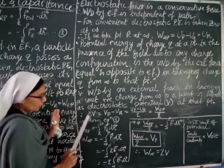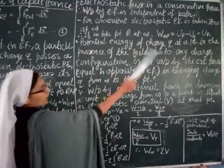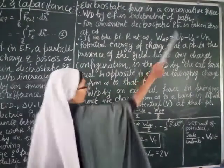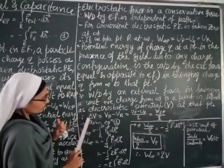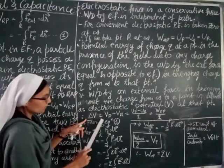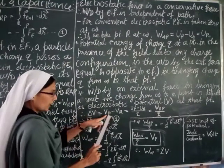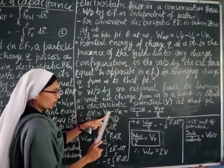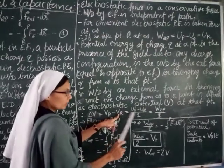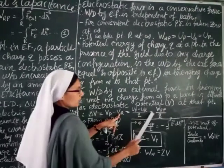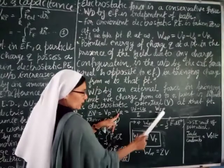So delta V = V_P − V_R, and taking the reference R at infinity, this becomes: (U_P − U_infinity) / Q = W_RP / Q, which gives us the potential at point P. The work done in bringing Q from infinity to P divided by Q equals V.